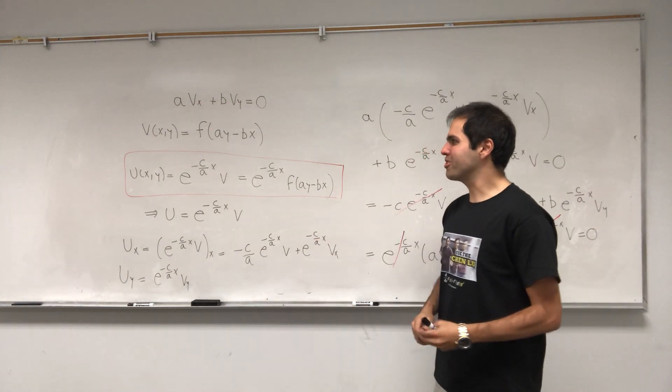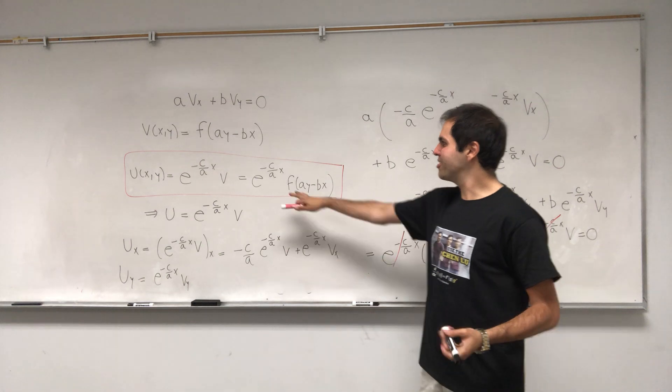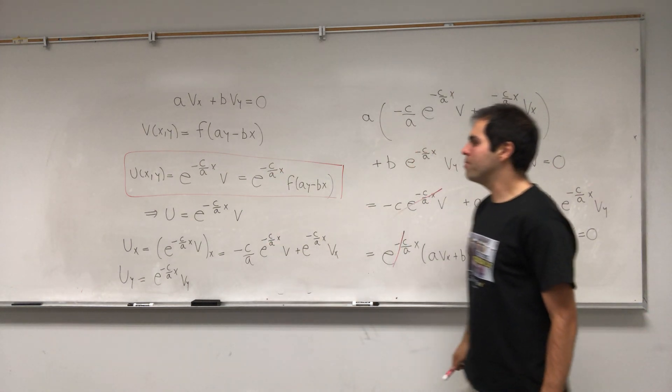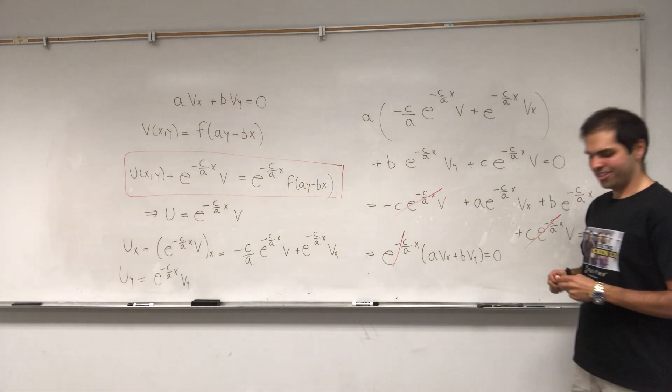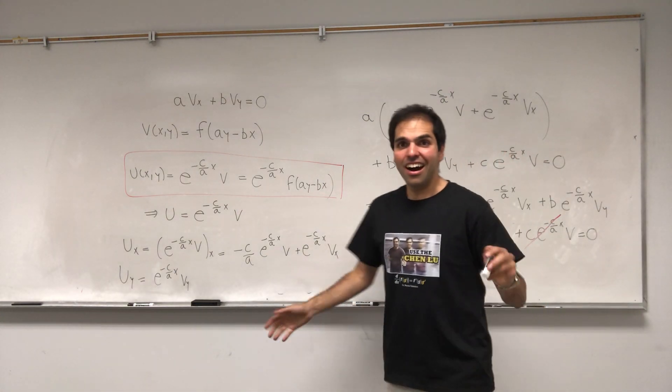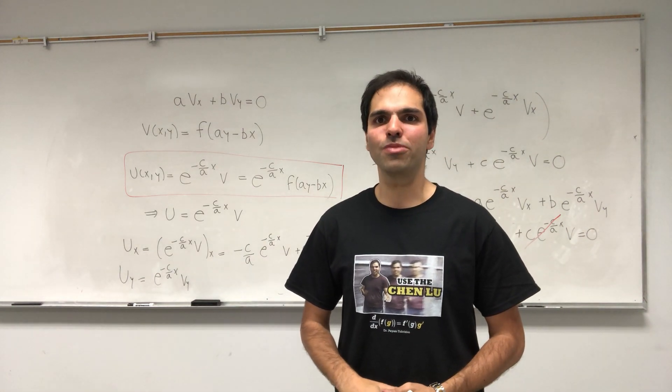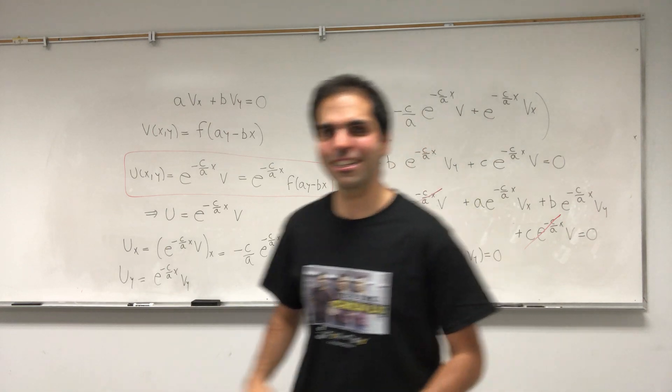This is your solution of the original equation AUX plus BUY plus CU equals 0. And again, F is an arbitrary function. And notice, in fact, if you look at the solution, it is of the form E to the minus C over AX times some other function. So actually, it works. All right, I hope you like this little extravaganza. If you want to see more math, please make sure to subscribe to my channel. Thank you very much.